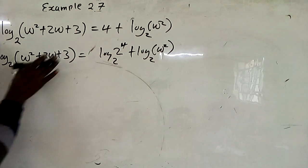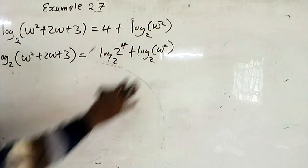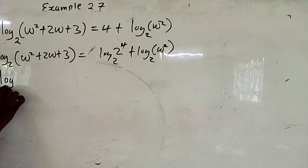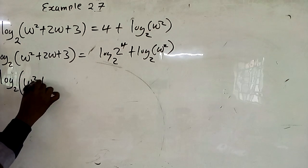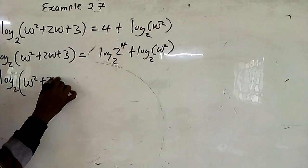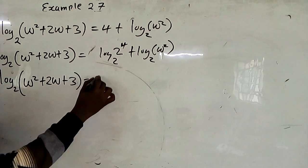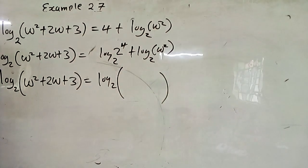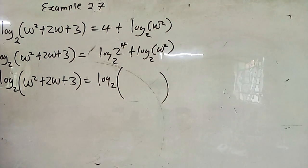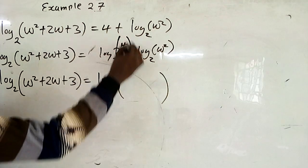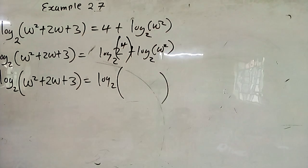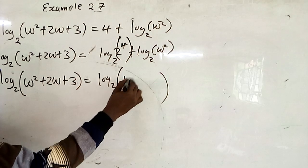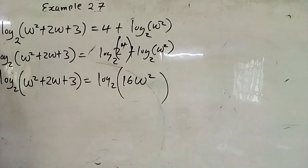This is one times one, so on this side of the equation we have log base 2 of (w squared plus 2w plus 3) equivalent to log base 2 of 2 raised to power 4 times w squared. Addition goes back to multiplication — 2 raised to power 4 is 16, so we get 16w squared.